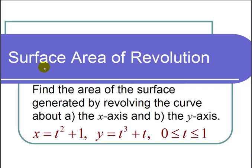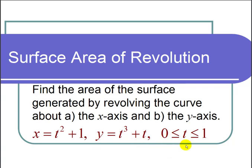This is a video on finding the surface area of revolution. The question states: find the area of the surface generated by revolving the curve about (a) the x-axis and (b) the y-axis. We have the parametric equations x equals t squared plus 1 and y equals t cubed plus t, where t goes between 0 and 1.